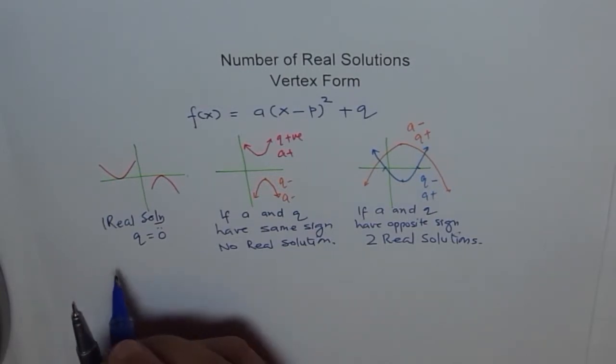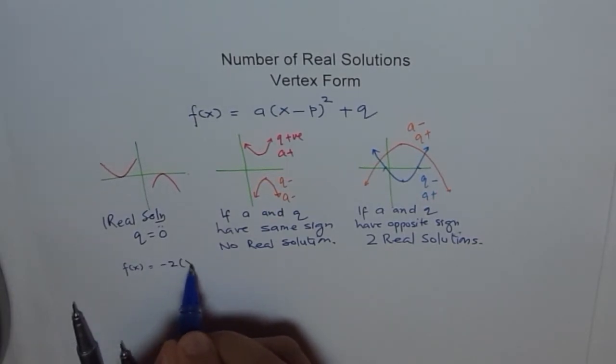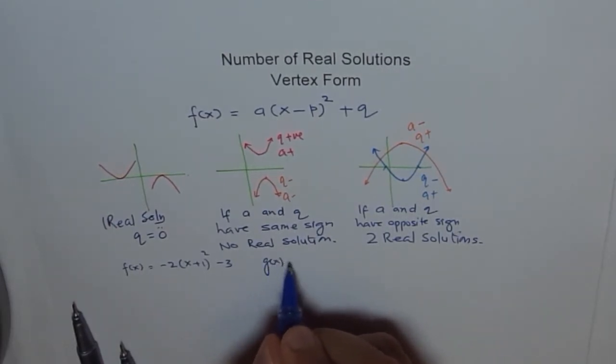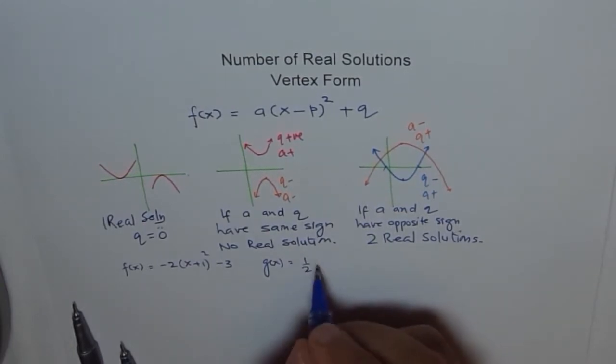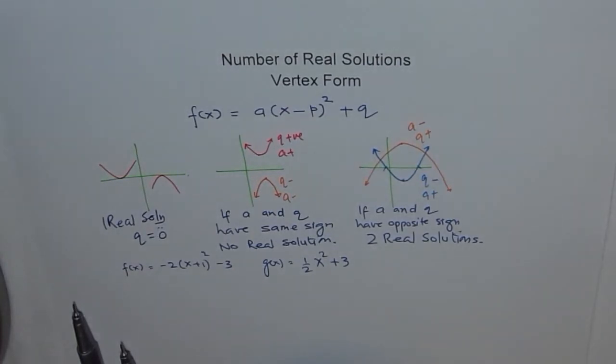Now, I hope you understand the concept. Let's take some examples. Let us say if I have a function f(x) = -2(x + 1)² - 3. In this, how many solutions do we get? The real ones. If I have g(x) = (1/2)x² + 3, how many solutions do we have here?